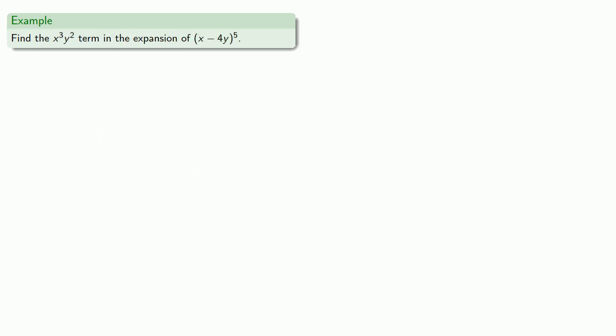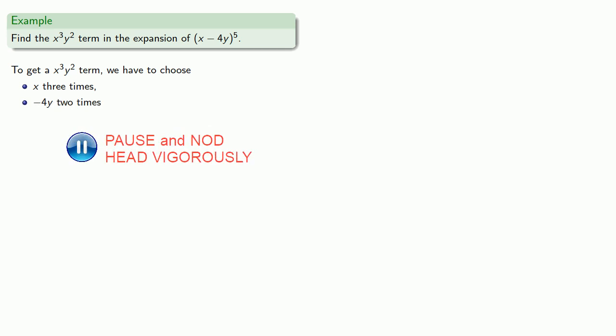And our binomial could include a variable. So let's find the x cubed y squared term. To get an x cubed y squared term, we have to choose x three times minus 4y two times. And so that's 5 choose 3, x to the third minus 4y to the second. And so our term will be...